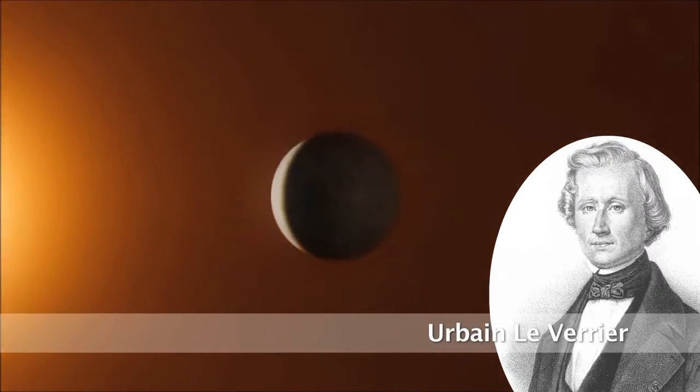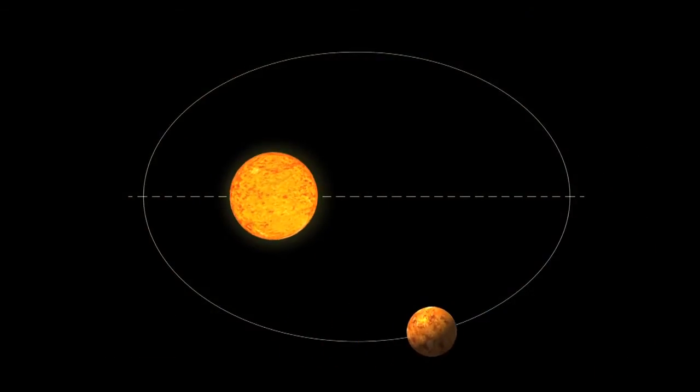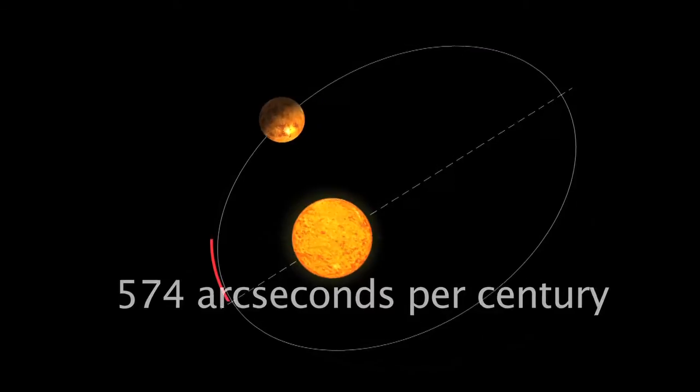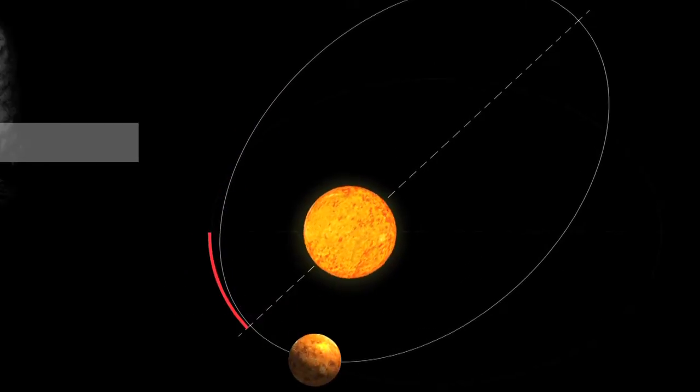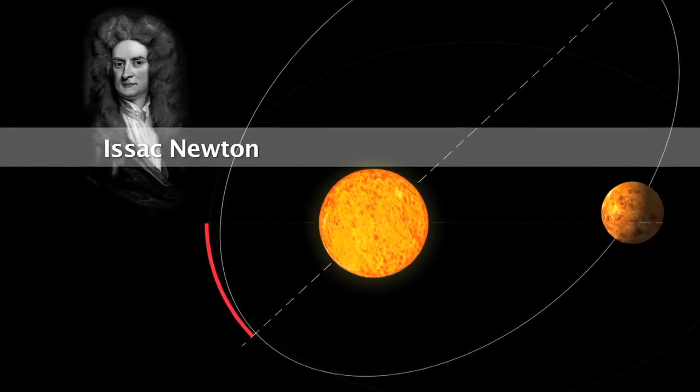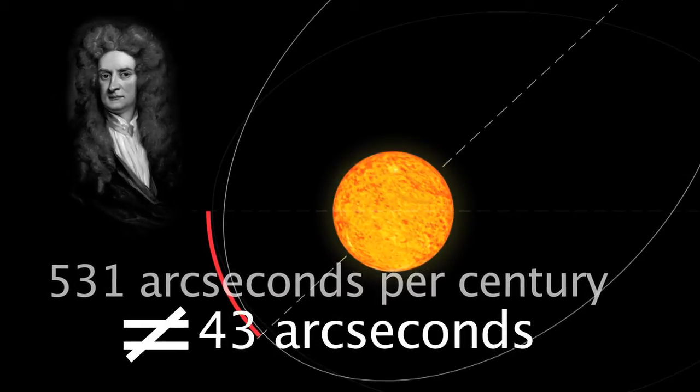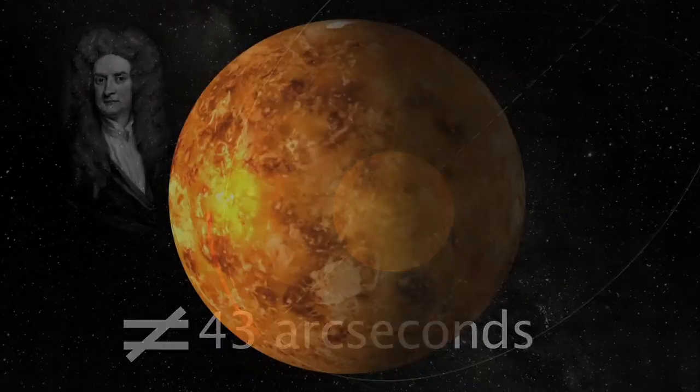Urbain Le Verrier showed that the point on the orbit of Mercury closest to the Sun, called perihelion, moves at about 574 arcseconds per century. And yet, according to Newton's theory, this value should be 531 arcseconds. That's a difference of 43 arcseconds between observation and theory.